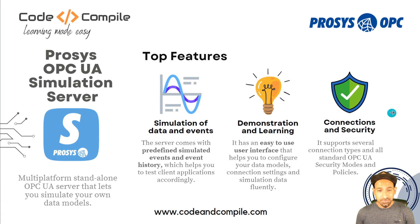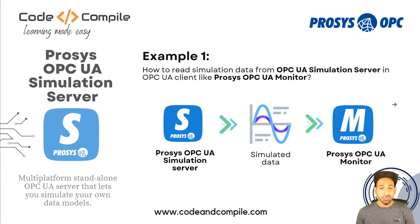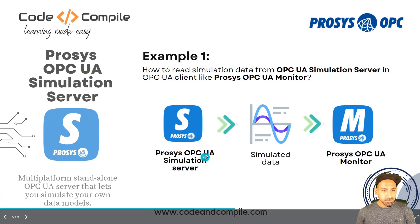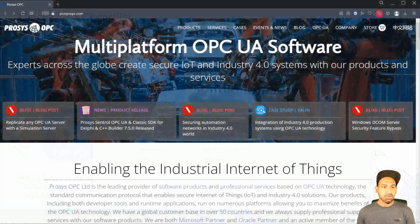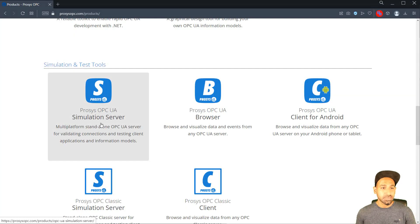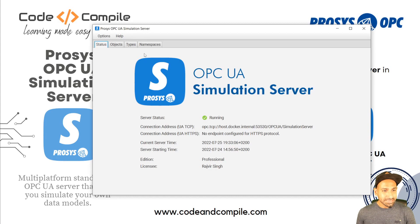Let's jump into some use case scenarios. First, we'll see how the software can give you simulated data to use in your OPC UA client. In this example, I'm going to use the Process OPC UA Simulation Server for simulation data, and I'll use Process OPC UA Monitor — an OPC UA client from the same company — to monitor the data. Let's open the simulation server. You can install it from their website and download a free evaluation version to try it out. Once you start the software, you'll see this window.